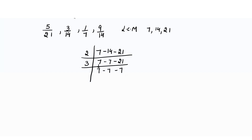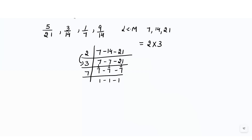Now dividing by 7: all three 7s become 1. We've reached 1, so the LCM of 7, 14, and 21 is 2 × 3 × 7 = 42. That means we now have to convert all the denominators to 42.